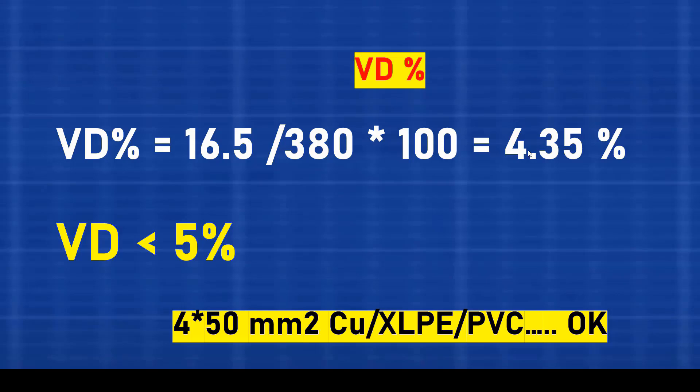Since this is less than 5%, the cable is acceptable. But if the voltage drop was higher than 5%, we would choose the next cable size, for example 70 square millimeters, and repeat the calculation.